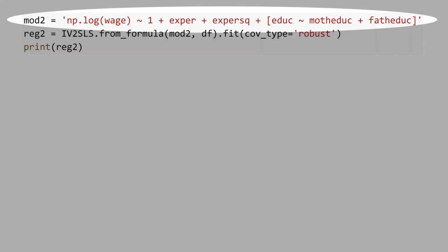Now, let's run IV or two-step least square. The difference is that now we specify IVs for education: mother education and father education.